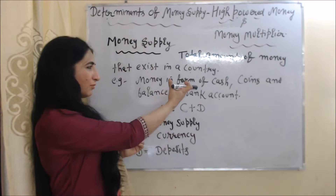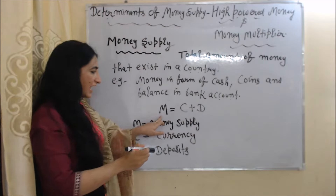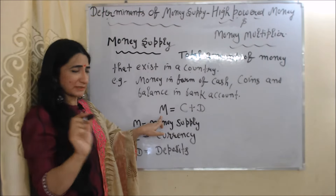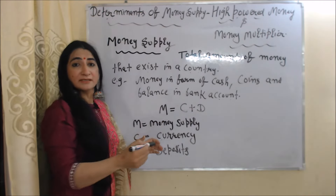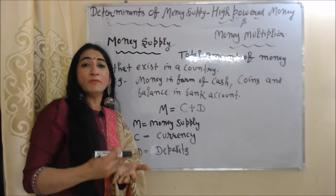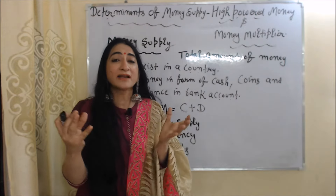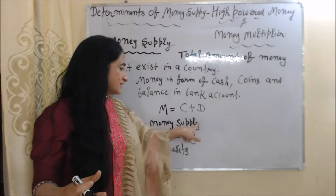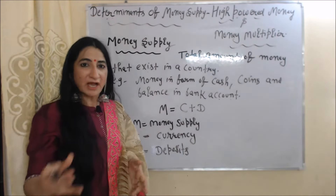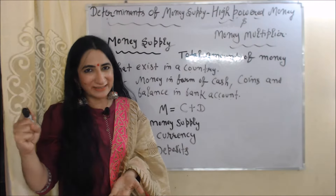That's why money supply is equal to C plus D. Here M is money supply. C is currency — meaning how many paper notes and coins are in people's hands. D means deposit, meaning how much money is deposited in banks.